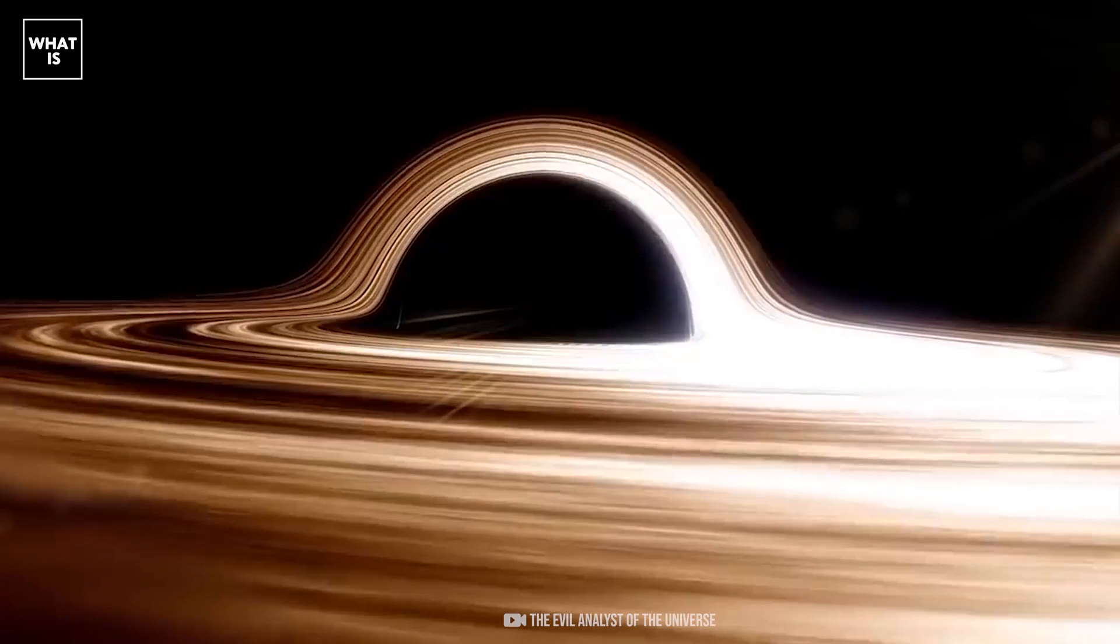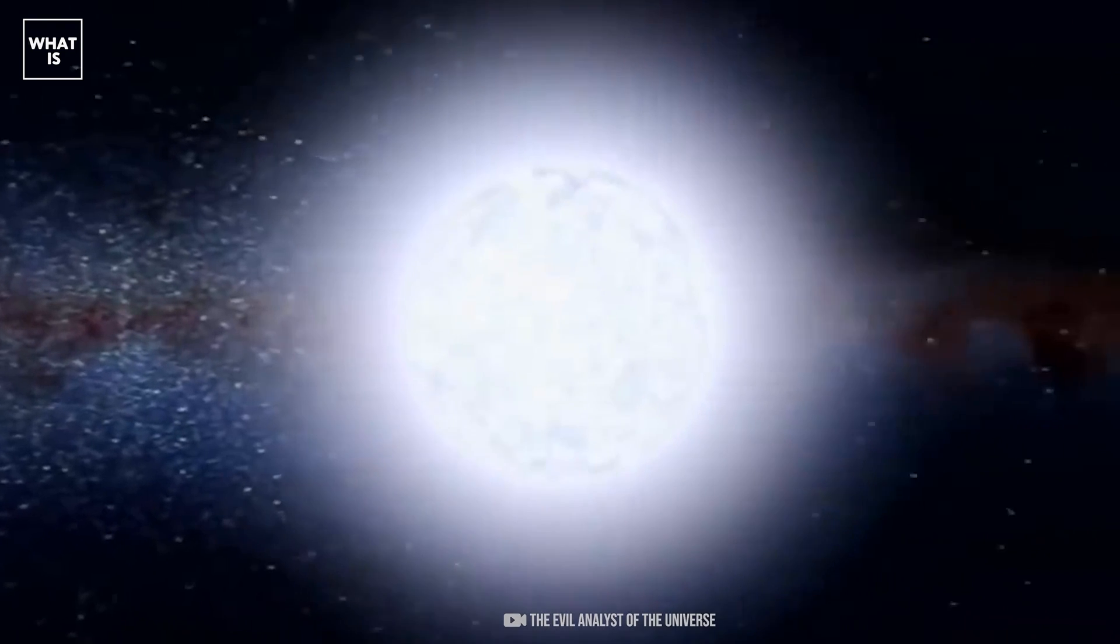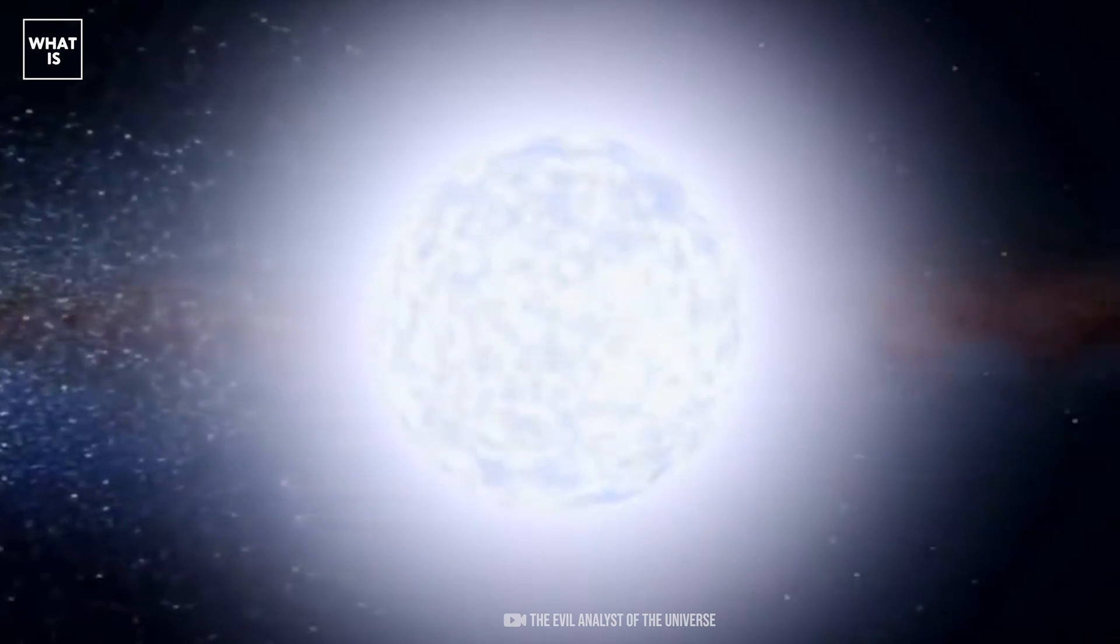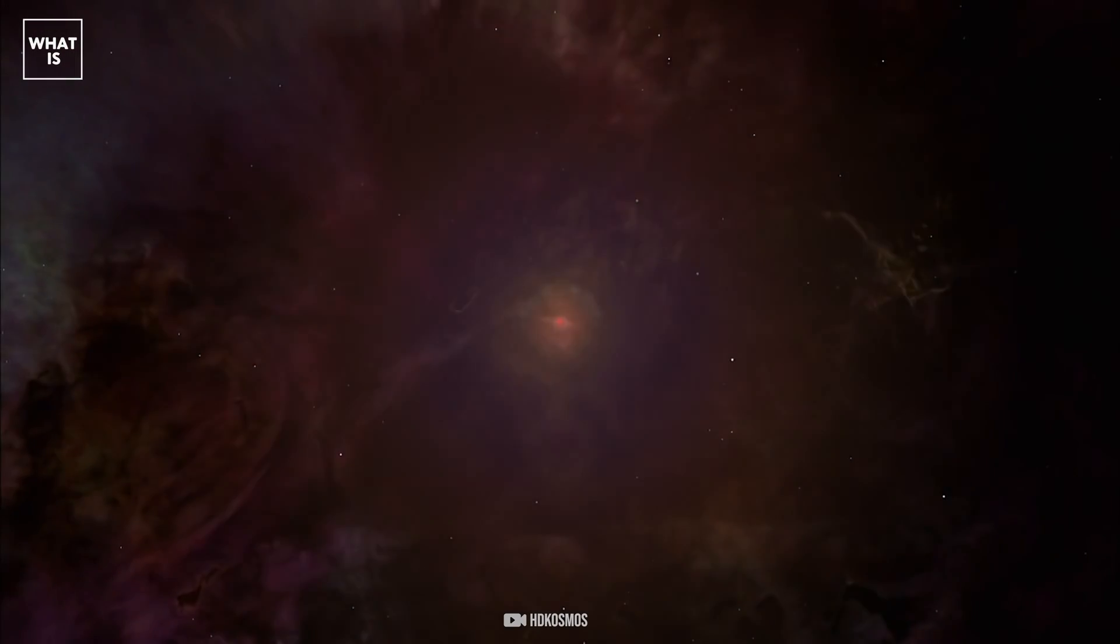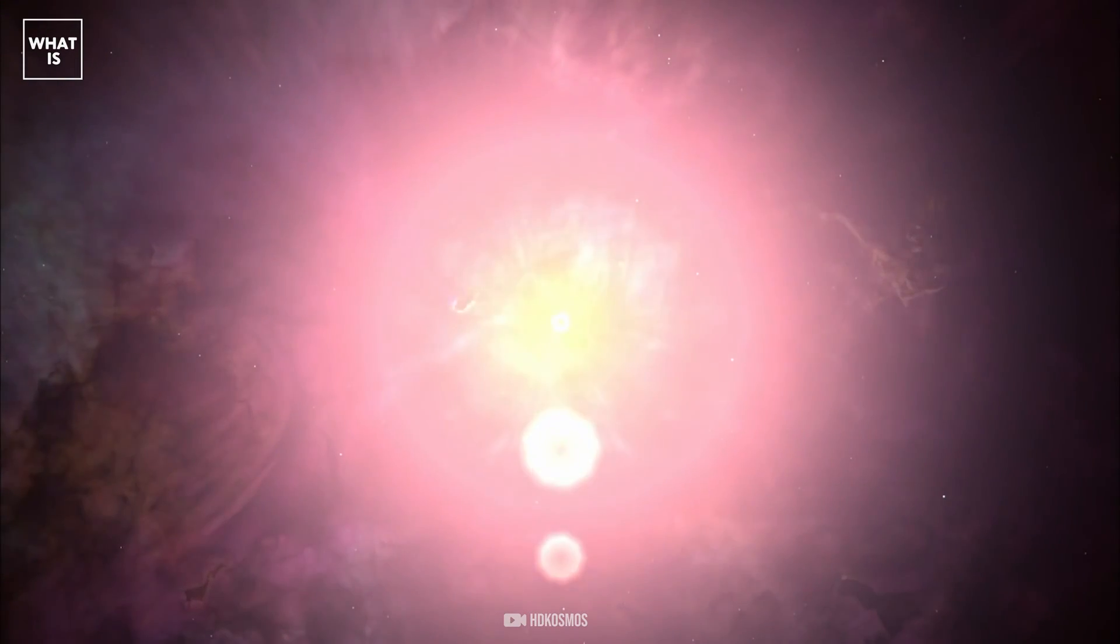Neutron stars are formed when an ordinary star collapses under its own gravity, becoming a supernova. The resulting neutron star remnant is much smaller and denser.